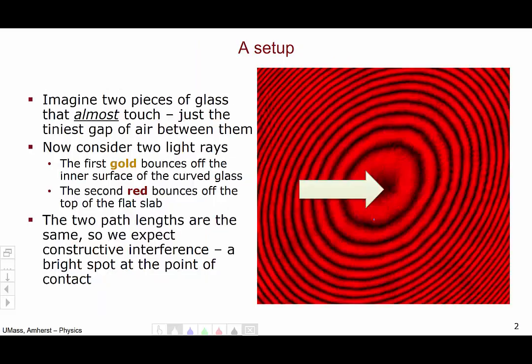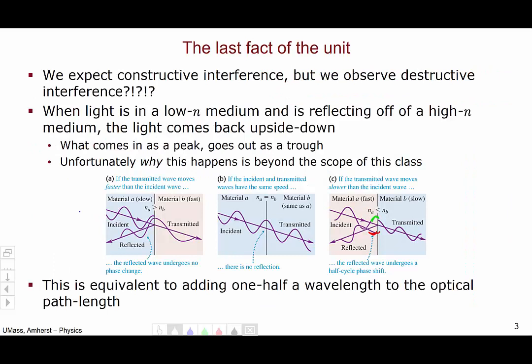So going back to our example, what's going on here in the middle. On the other hand, light that is in a medium where it travels slowly, bouncing off a material in which it would move more quickly, there is no phase change, so I don't add half a wavelength. And of course, if the media are the same on both sides, there is no reflection.